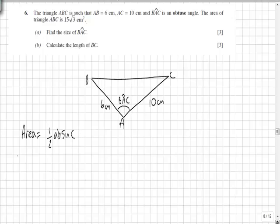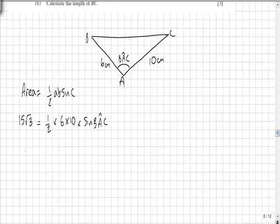So substituting the information we've got, we've got 15 root 3 is equal to a half times 6 times 10 times sine BAC. Simplifying slightly, we have 15 root 3 is equal to 30 sine BAC.